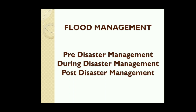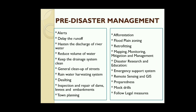Now, flood management. Humans cannot stop rain or surface flow as they are natural events, so it is important to take certain actions to reduce the disadvantages caused by flood. These are divided into three categories: pre-disaster management, during disaster management, and post-disaster management. For pre-disaster management, the first measure is alert systems. The Central Water Commission uses a color-code system to alert local people in case of emergency.